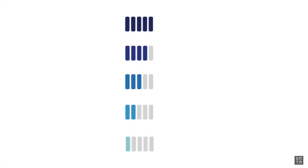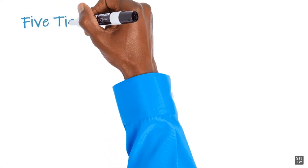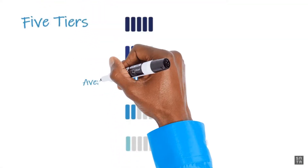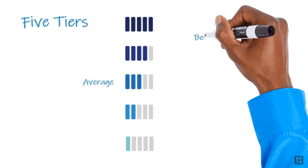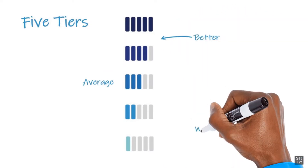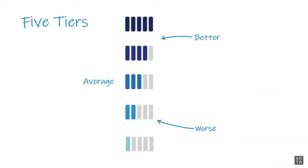Also in fulfillment of the Final Rule, the SRTR contractor must identify transplant programs and organ procurement organizations with better or worse outcomes.